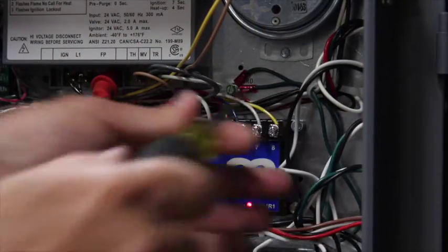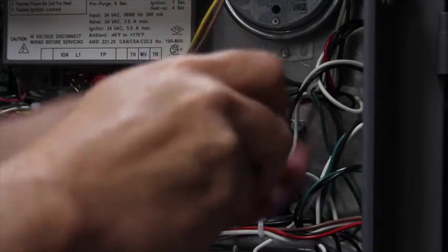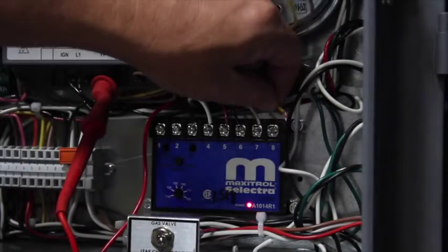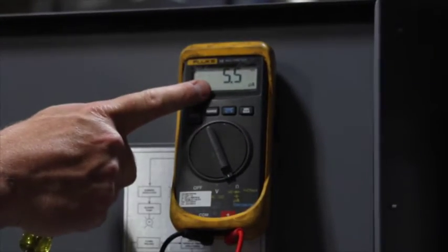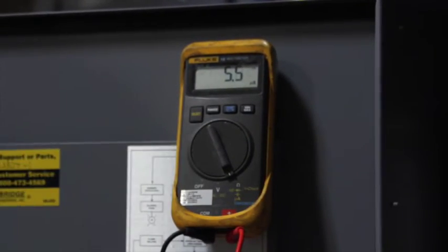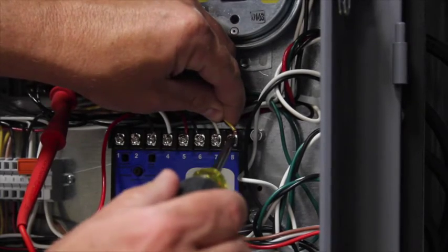Next, remove wire number eight from the amplifier. This will place the heater in low fire. Now verify your flame signal is from three to six microamps. If it is less than three, consult the factory. Next, reconnect wire number eight to the amplifier.